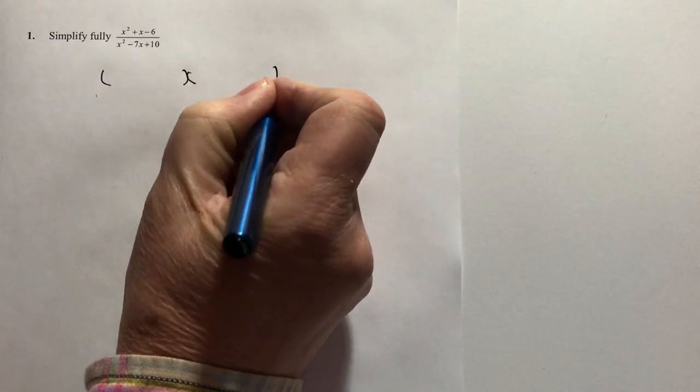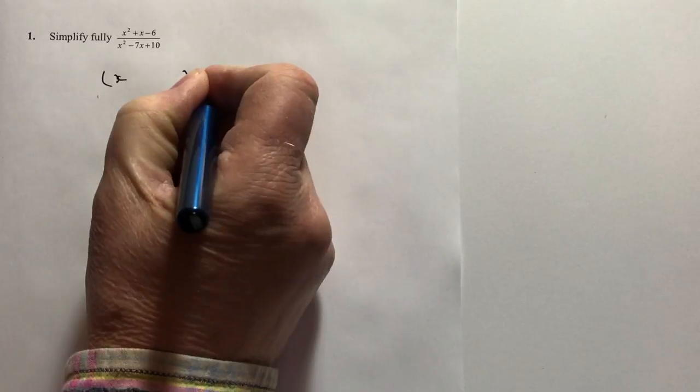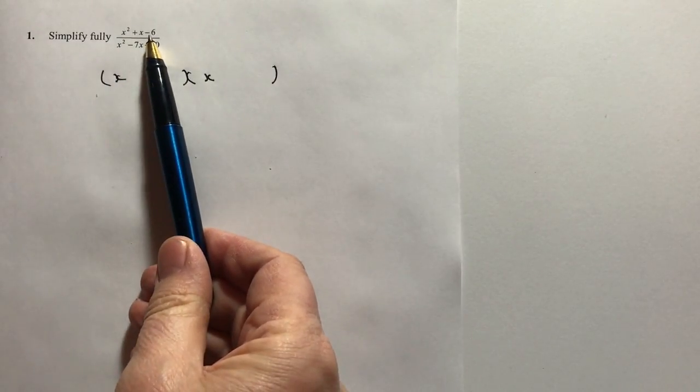So if we have a look at the top one here, I can factorise that to two bracketed terms. One is x there and then I look at two numbers that when I multiply them together will make minus six. Well those two numbers in this particular case are going to be plus three and minus two.